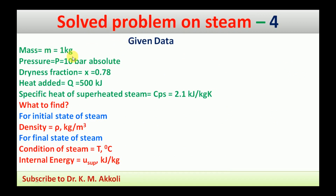The given data: mass is 1 kg, pressure P is 10 bar absolute, dryness fraction x = 0.78 for the initial state, heat added Q = 500 kilojoule, specific heat of superheated steam Cps = 2.1 kilojoule per kg Kelvin. To find: for the initial state of steam, the density rho; for the final state of steam, the condition (temperature) and the internal energy.